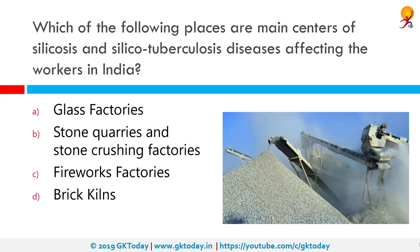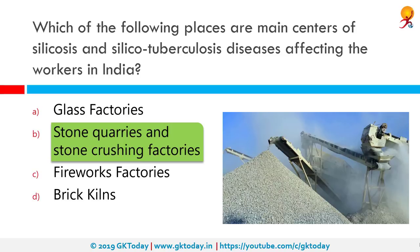Which places are main centres of silicosis and silicotuberculosis diseases affecting workers in India? The correct answer is stone quarries and stone-crushing factories. Silicosis, the most prevalent pneumoconiosis, is caused by inhalation of crystalline silica particles. Silica-exposed workers are at risk of tuberculosis and other mycobacterium-related diseases.